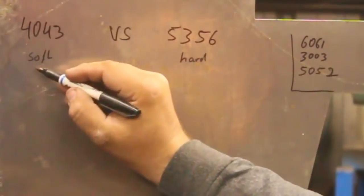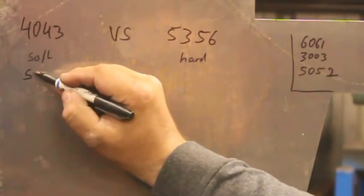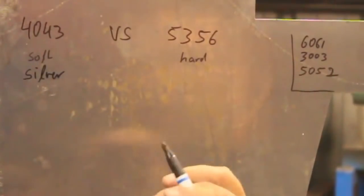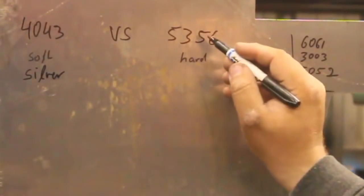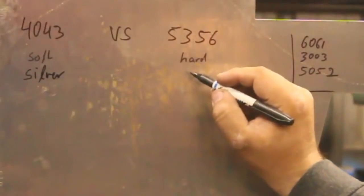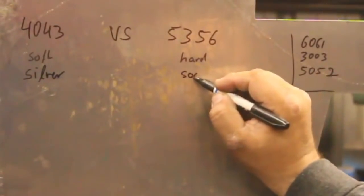The 4043 comes out nice and silver, shiny, a small frost line around it. The 5356 has a lot of soot in it usually.